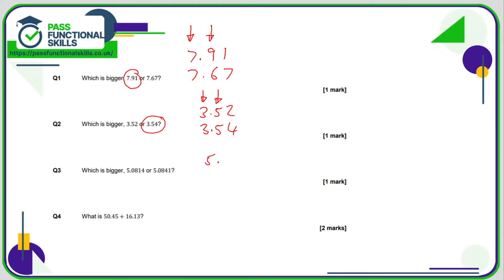Question number three, 5.0814 and 5.0841. In the units everything is the same, in the tenths everything is the same, in the hundredths everything is the same, but in the thousandths we've got a 1 and a 4. 4 is bigger than 1, so therefore 5.0841 is greater.